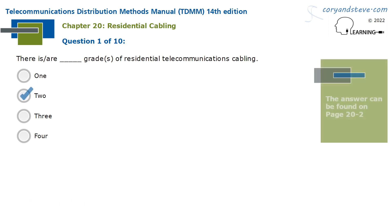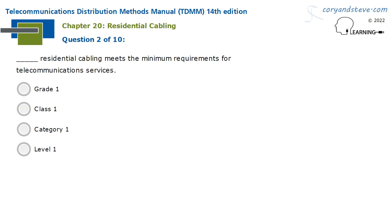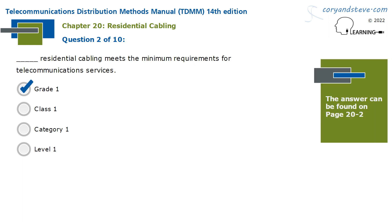There are two grades of Residential Telecommunications Cabling. Grade 1, Residential Cabling, meets the minimum requirements for telecommunications services.